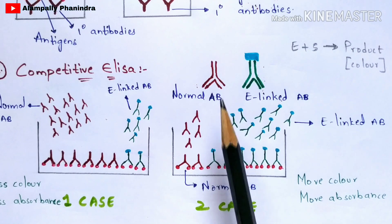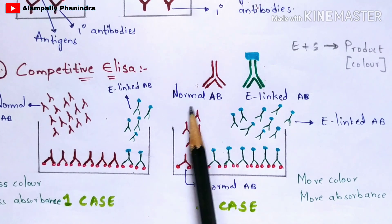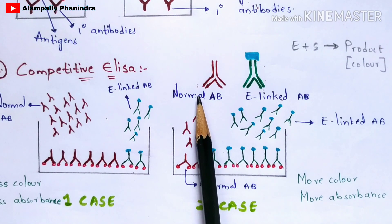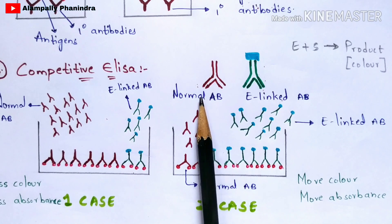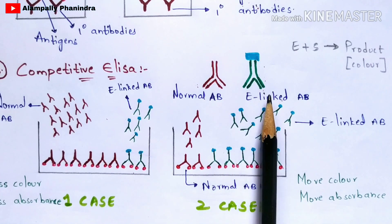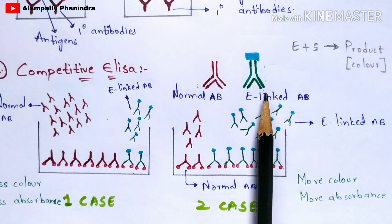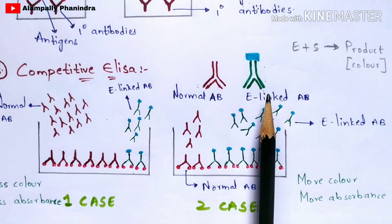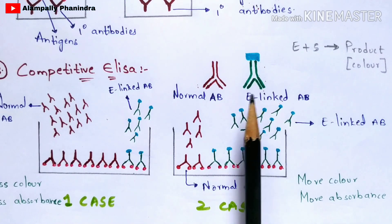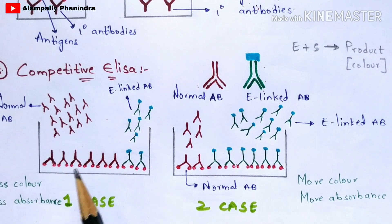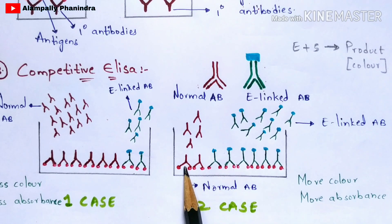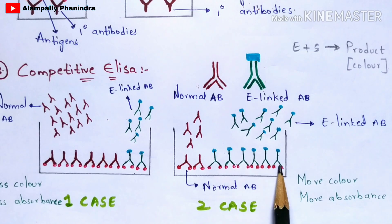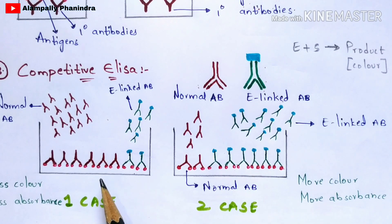When the concentration of normal antibody is more, it binds to more antigens; when less, it binds to fewer antigens. The same applies to enzyme-linked antibodies. This leads to two cases: Case 1 has more concentration of normal antibodies and less concentration of enzyme-linked antibodies. Case 2 is the opposite — less normal antibody and more enzyme-linked antibody.